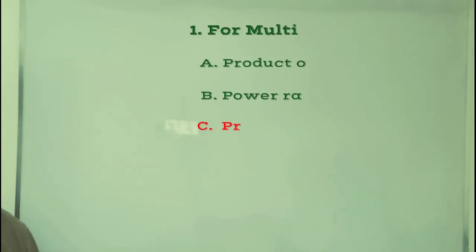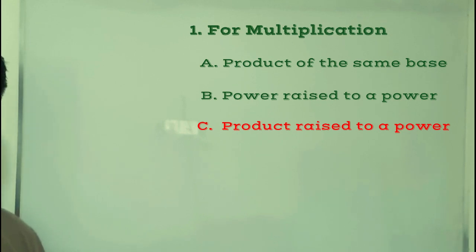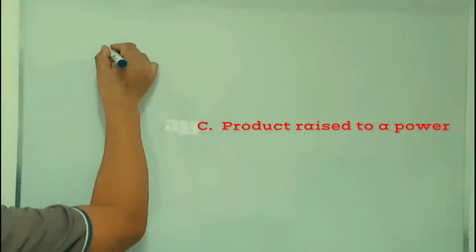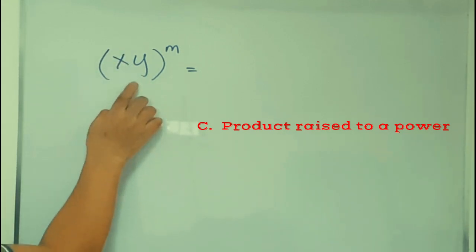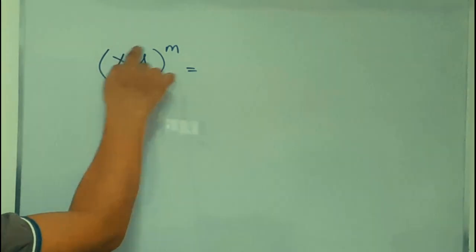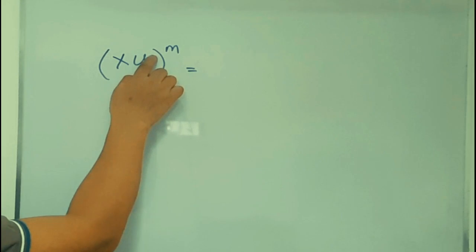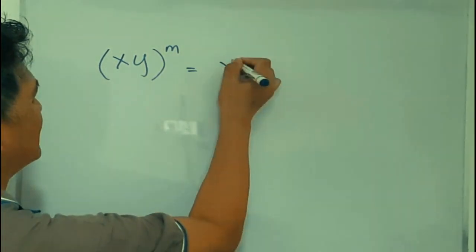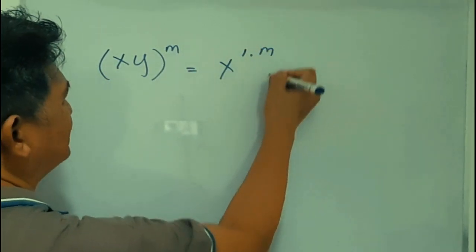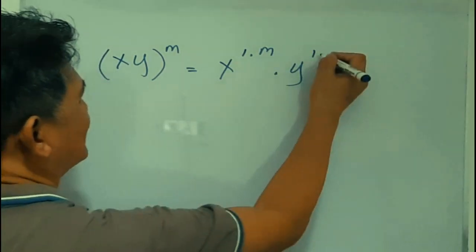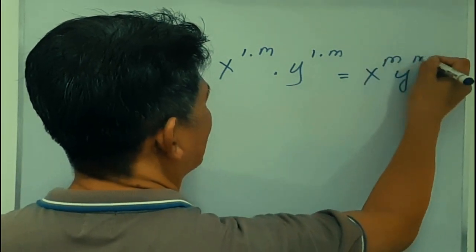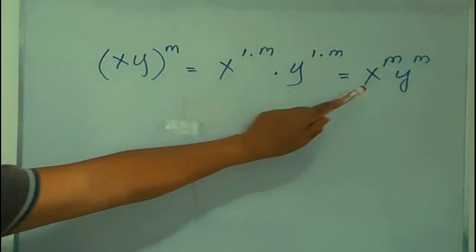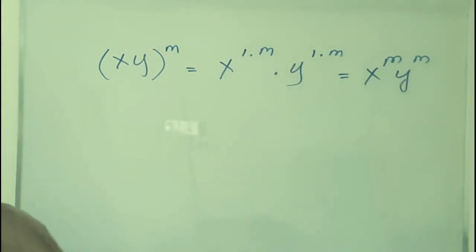Now let's take Law Number 3: product raised to a power. That means the product of x and y, raised to n. Since x and y are understood to each have an exponent of 1, you multiply each base's exponent by m. So that gives x to the power of 1 times m, multiplied by y to the power of 1 times m, which equals x raised to m times y raised to m.